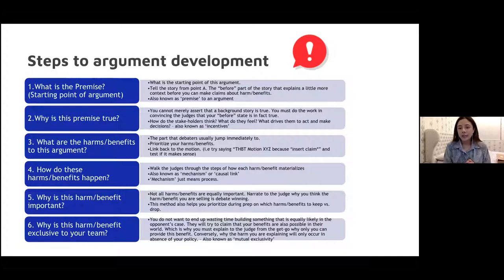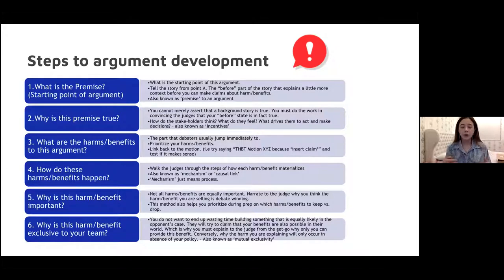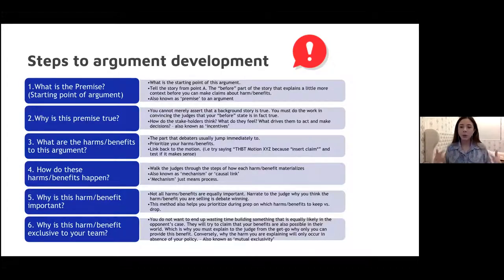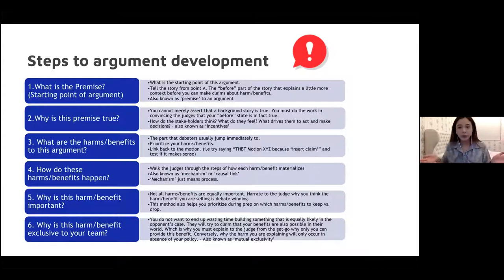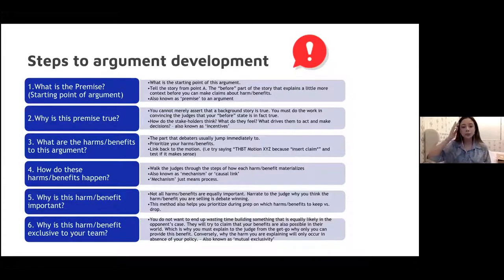You know when a motion seems to be about livelihoods of vulnerable groups, but a team prioritizes corporations losing profit as their argument — if the conclusion is just that big corporations lose profit but the motion is about starving children, adding the motion plus 'because' plus that argument will make you sound really unpersuasive. I do think this is a good sanity check for the reasonableness of the argument you're trying to sell. Step four: how do these harms or benefits happen? You should walk the judges through the steps of how each harm and benefit materializes.